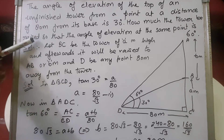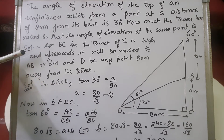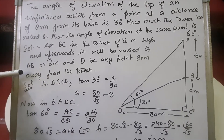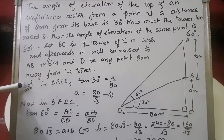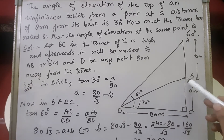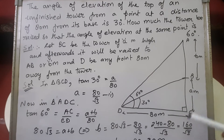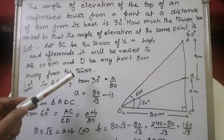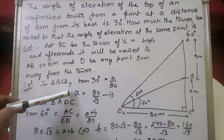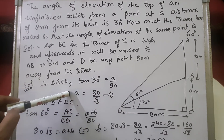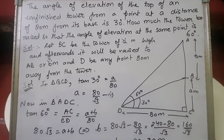Solution: Let BC be the tower of a meters high, raised by b meters to total height a plus b. D is 80 meters from the tower. In triangle BCD with angle of elevation 30°: tan 30° equals a upon 80. Since tan 30° equals 1 upon root 3, cross-multiplying gives the value of a as 80 upon root 3. This is our first condition — the height of the unfinished tower.